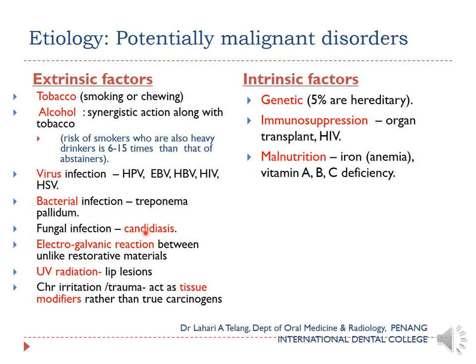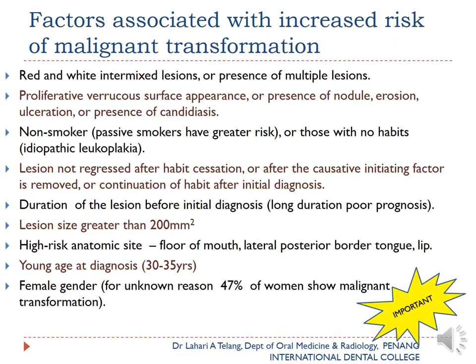Other extrinsic factors include fungal infections like candidiasis, electrogalvanic reactions between unlike restorative materials, UV radiation causing lip lesions, and chronic irritation or trauma — which acts as a tissue modifier rather than a true carcinogen. Intrinsic factors include genetic predisposition (about 5% of cancers), immune suppression such as organ transplant or HIV making patients more susceptible, and malnourishment such as anemia or vitamin deficiencies.